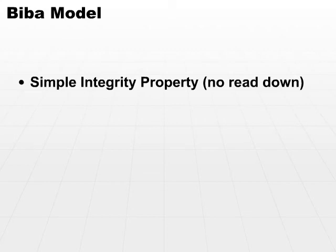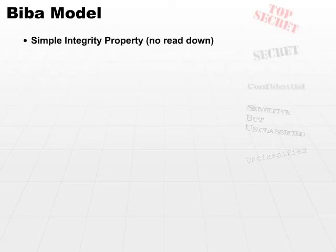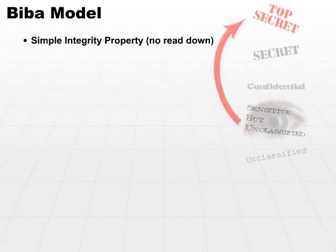The first property is the simple integrity property: no read down. As you're preparing for understanding the different security models, these two models are a little hard to keep straight unless you really consider their focus. Notice that in the Bell-LaPadula model there was the no read up property — no read up supports confidentiality. No read down supports integrity. This says that a subject may not read an object of a lower integrity level.